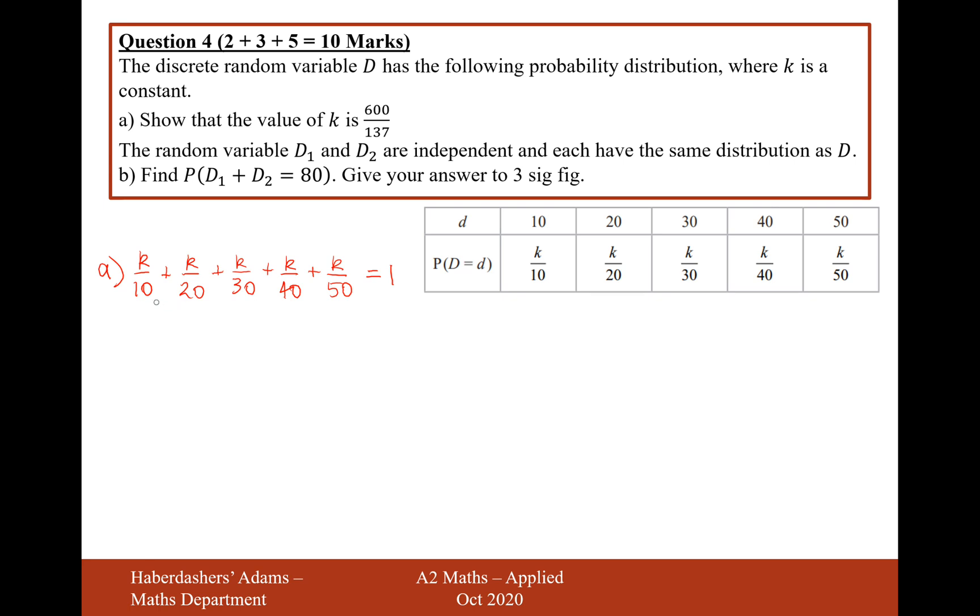What will be helpful is to find a common denominator between all of these fractions here. I think 600 will probably do. So if we use 60k over 600, this one here is going to be 30k over 600, this one here is going to be 20k over 600, this one here is going to be 15k over 600, and this one here is going to be 12k over 600 equals 1.